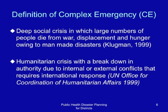A complex emergency is a deep social crisis in which large numbers of people die from war, displacement, and hunger owing to man-made disasters. This is a definition by Klugman. It is also defined as a humanitarian crisis with a breakdown in authority due to internal or external conflicts that requires international response. This definition is by the UN Office for Coordination of Humanitarian Affairs, OCHA.